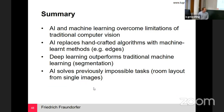Now at the end of my talk, let me summarize with four final statements. AI and machine learning can overcome limitations of traditional computer vision. Artificial intelligence methods replace handcrafted algorithms with machine-learned methods, as seen with the edges. Deep learning outperforms traditional machine learning in segmentation and image interpretation. And AI allows us to solve previously impossible tasks — like estimating room layout from single images, which is quite fascinating. Thank you, and I'm happy to take questions.